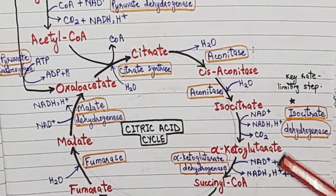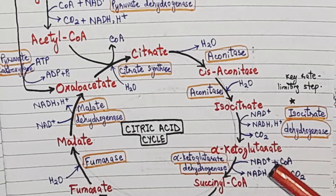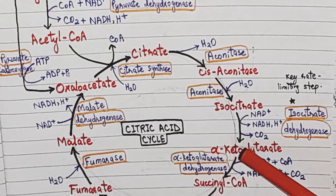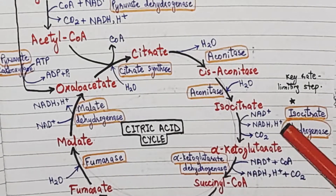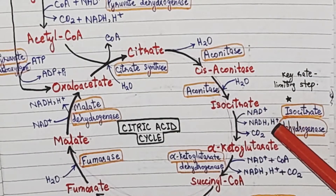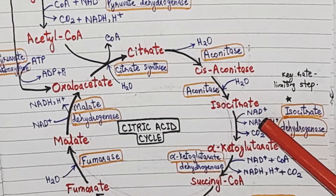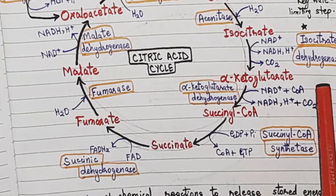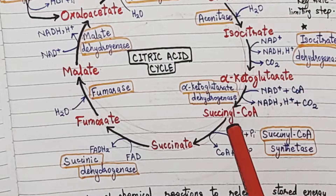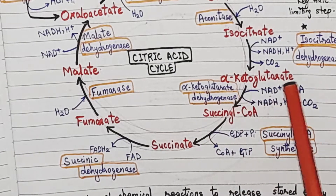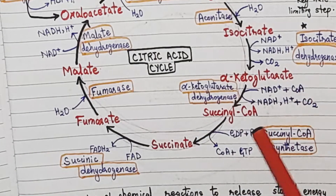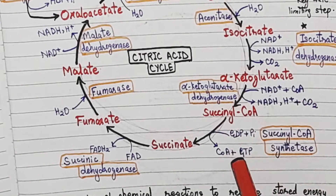Isocitrate is then converted into alpha-ketoglutarate. During this reaction, carbon dioxide is liberated and NADH is produced.